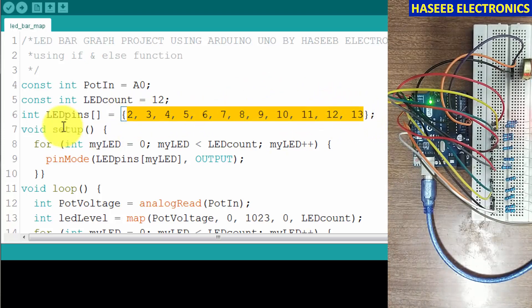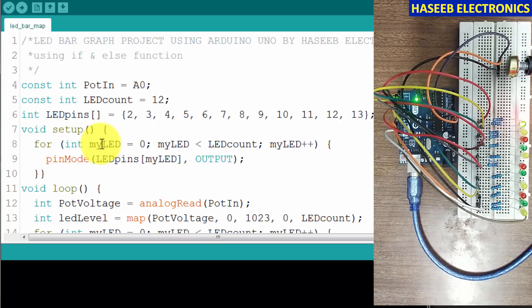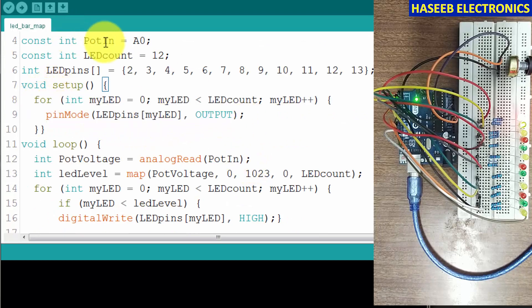In the setup we will say int myLED - it's a new integer to assign the LED number. For integer myLED we can give any name to the LED number. myLED equals 0, it will start from zero and the maximum number is 12, that is LEDcount. Between zero and LEDcount it will keep increasing plus one, so it will move step by step. Then for this condition, for this integer pinMode LEDpins from this array, what is the number of myLED from 0 to 12, these are output pins. This is our statement. We can also define the pin mode for A0, but as we defined here constant integer, no need to write in the setup.